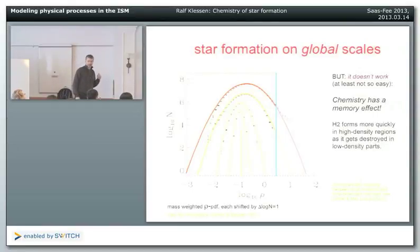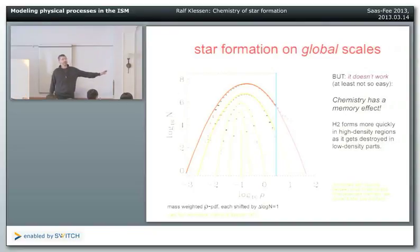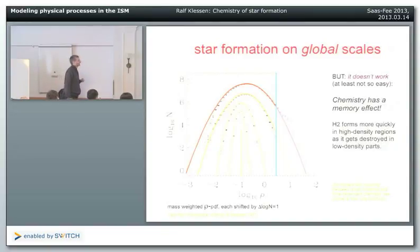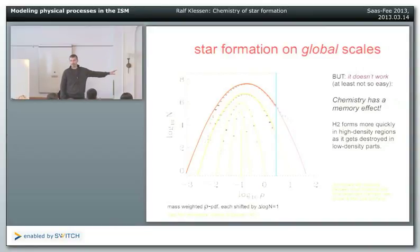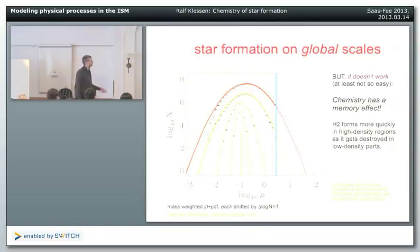You will hear more about star formation laws based on statistical properties of turbulence - probably this afternoon or tomorrow. They all use the same framework: take a density distribution function related to the Mach number, take a certain fraction at the high-density tail and turn that into stars. The most elaborate model comes from Phil Hopkins who uses extended Press-Schechter analysis from cosmology applied to this problem.